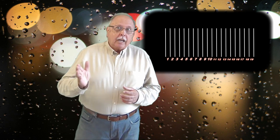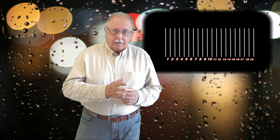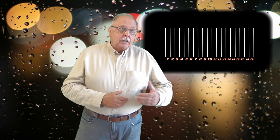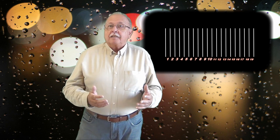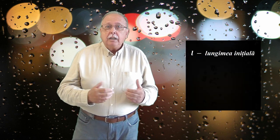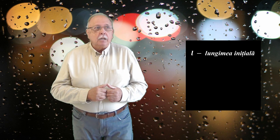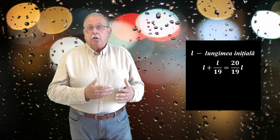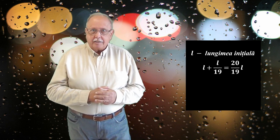Deci, ceea ce s-a întâmplat este echivalent cu tăierea unei bucăți de sârmă în 19 bucăți egale și apoi lipirea acelor 19 bucăți de cele 19 sârme rămase. Rezultatul este același. Așa că fiecare sârmă este în final mai lungă cu a 19-a parte din lungimea ei inițială, s-o notăm cu L, adică după lipire fiecare sârmă are lungimea L plus L pe 19, 20 pe 19 înmulțit cu lungimea inițială.